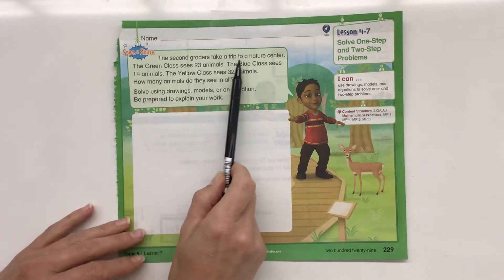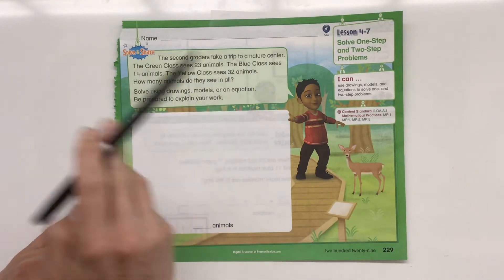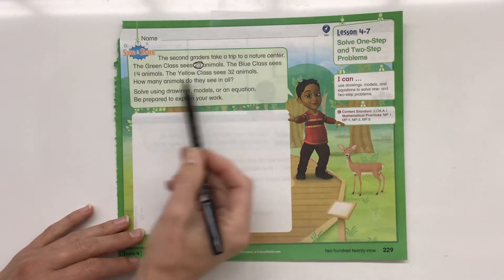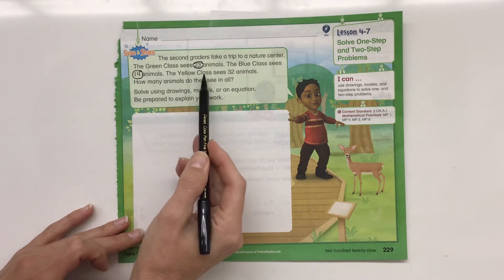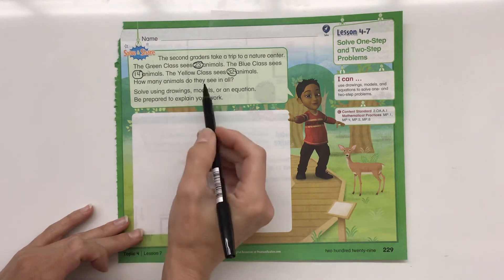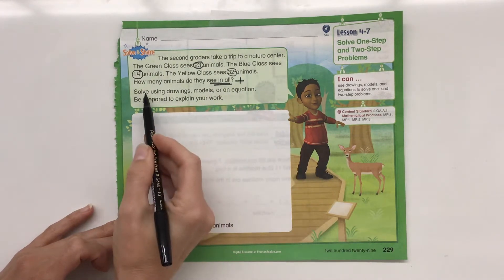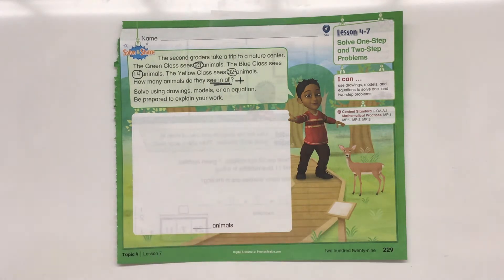The second graders take a trip to a nature center. The green class sees 23 animals. The blue class sees 14 animals. The yellow class sees 32 animals. How many animals do they see in all? So we're going to be adding together.